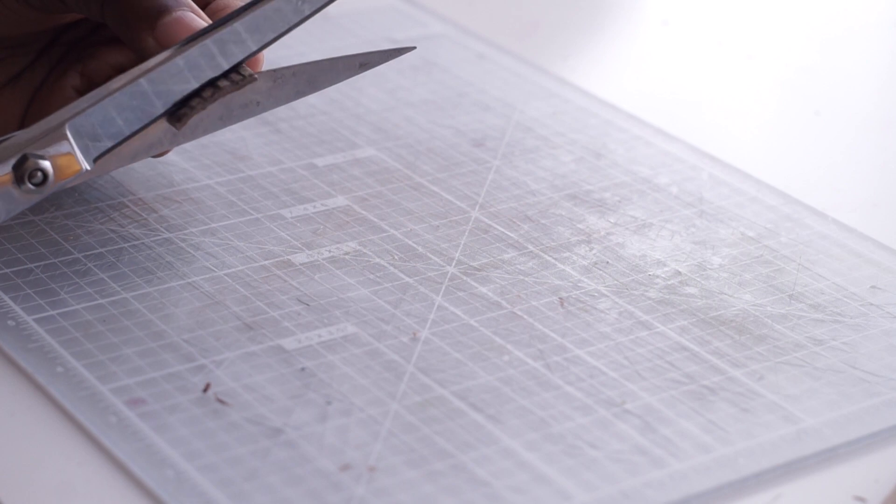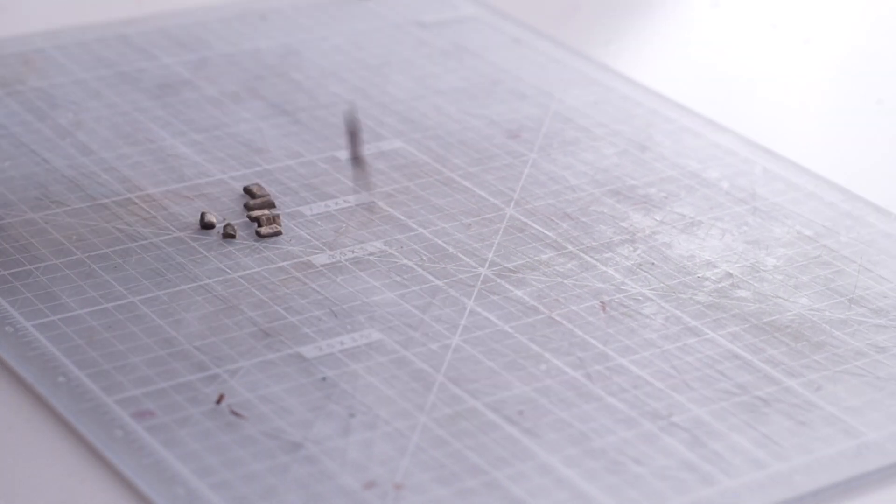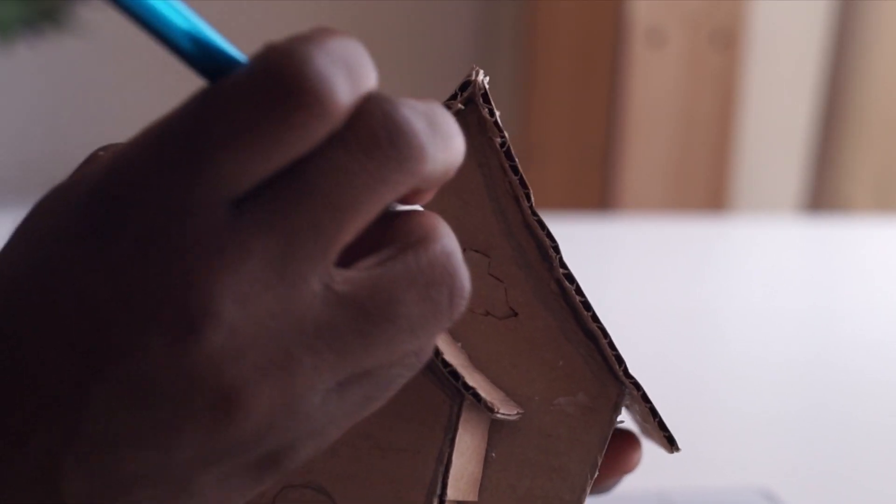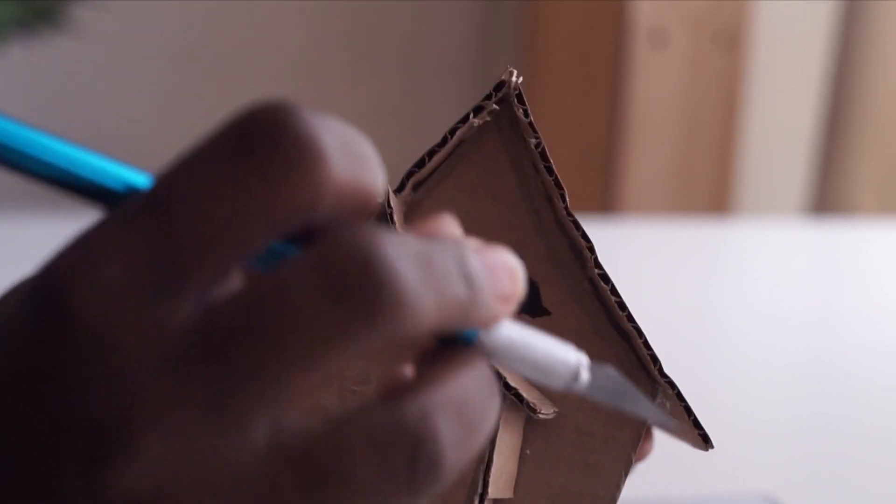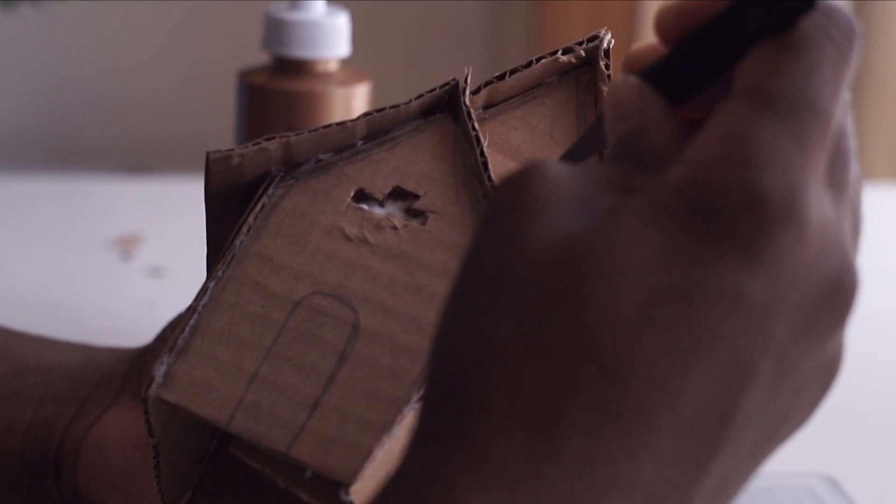So another new technique that I tried out for the first time on this build is using egg carton for the bricks. I had heard about this all over the internet, but I never actually gave it a try until now, and it's amazing. Just like using the cardboard turned out to be a really good idea, these are my new favorite way to make bricks.